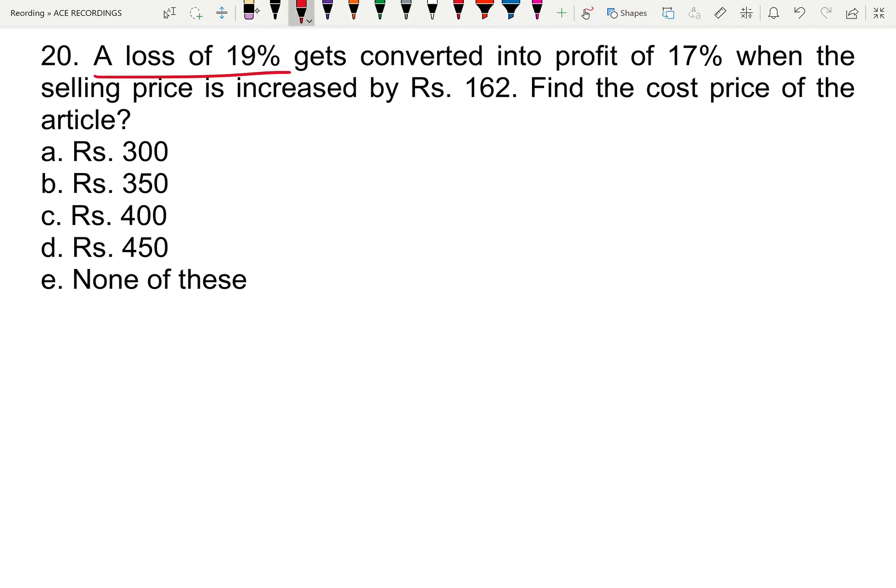A loss of 19 percentage gets converted into a profit of 17 percentage when the selling price is increased by rupees 162. Find the cost price of the article.